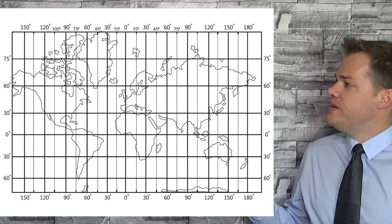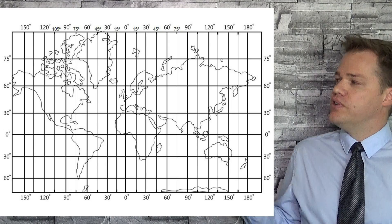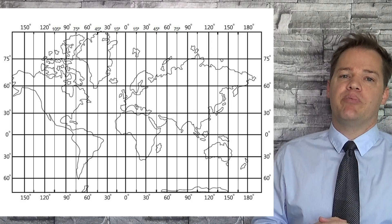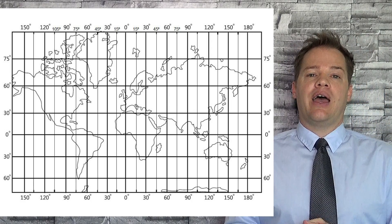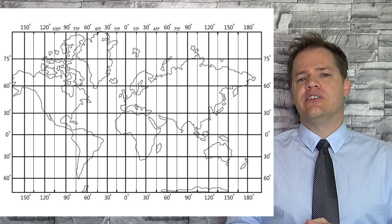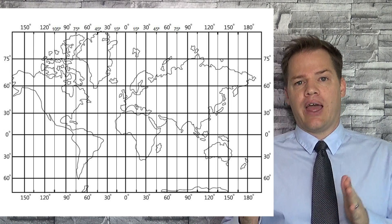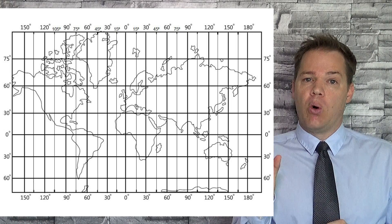Then let's move on to Grid North. Grid North is simply found by using these lines of longitude — these vertical lines — so if you just follow them to the top of the map, that is called Grid North. Very often navigators ignore the difference between Grid North and True North because the difference is so small.